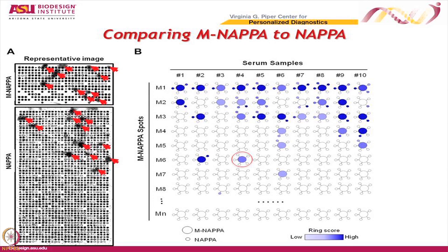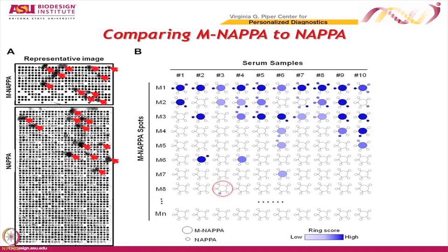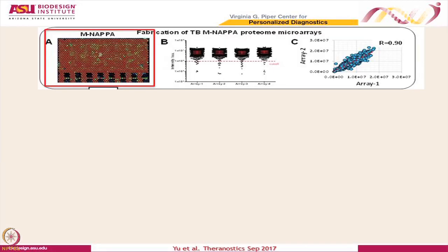A false positive is where the major mixed spot gives a signal but is often weaker. A false negative is where the individual spot gives a signal but the master mixed spot does not. We looked for these and found them in a few percent of cases, but the vast majority of the time the mixed spot was sufficient to find whatever was present in the individual spots — giving confidence to use multiplex NAPA over standard NAPA.